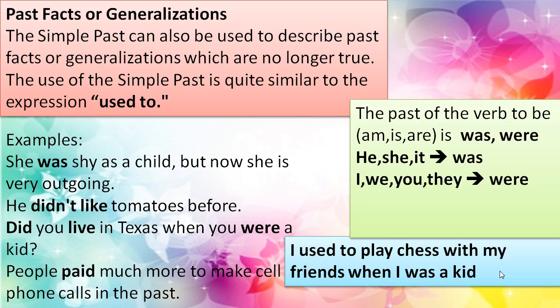The verb 'to be' — am, is, are — becomes 'was' and 'were' in the past. So: 'he was,' 'she was,' 'it was,' 'we were,' 'you were,' 'they were.' Thank you for watching this video.